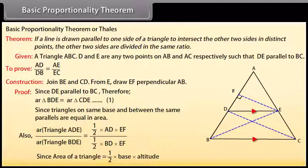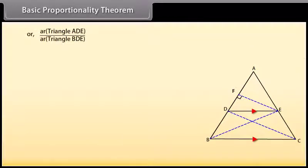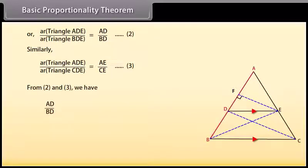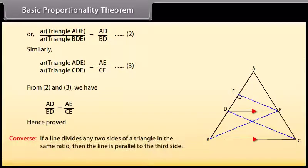Since area of a triangle is equal to half times base times altitude, area of triangle ADE upon area of triangle BDE equals AD upon BD — mark it as two. Similarly, area of triangle ADE upon area of triangle CDE equals AE upon EC — mark it as three. From two and three we have AD upon BD equals AE upon EC. Hence proved. The converse is also true: if a line divides any two sides of a triangle in the same ratio, then the line is parallel to the third side.